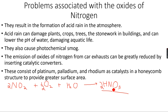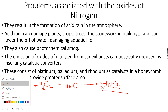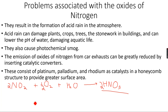When this nitric acid falls down, it is basically falling down as acid rain. Acid rain can damage plants, crops, trees, the stonework in buildings, and can lower the pH of water, damaging aquatic life. You will need to learn all of this.